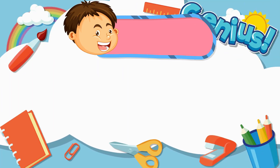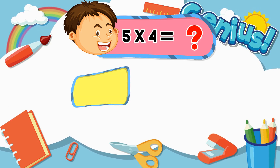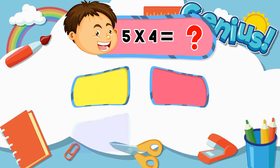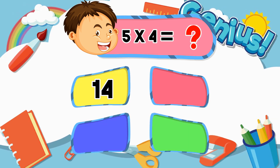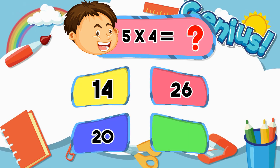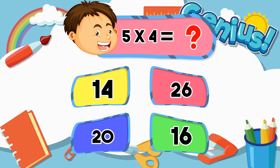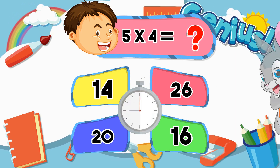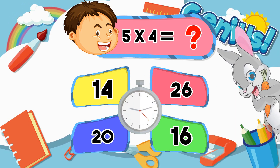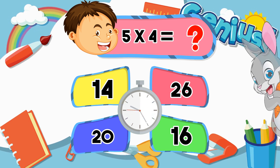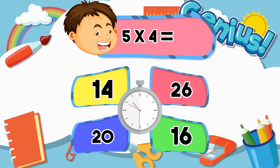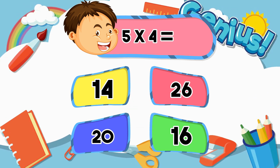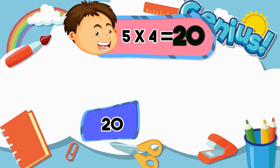What is 5 times 4? 24, 24, 25, 26, 27, 28. 20.